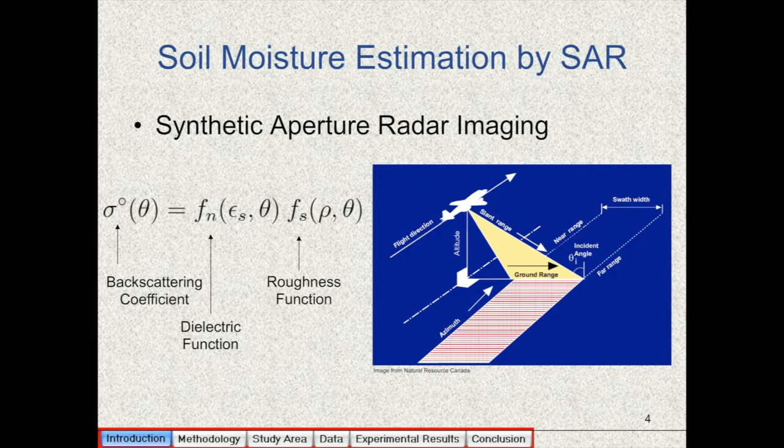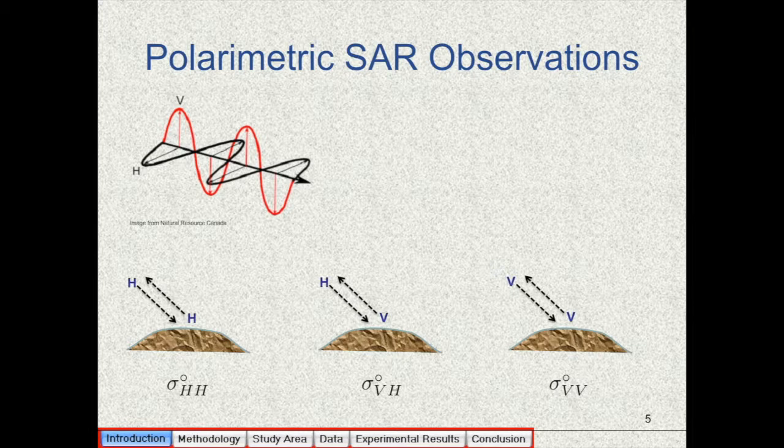So if we consider the backscattering coefficient of a SAR system as observation, this backscattering coefficient is a function of dielectric properties of soil and also a function of the roughness of the surface of the object. So in case of polarimetric SAR observations, we can have the backscattering coefficient in different channels corresponding to different polarizations. For a monostatic polarimetric SAR like Radarsat-2, we may have backscattering coefficient in HH, VH and VV channels. These channels or a subset of them are used for estimation of near surface soil moisture.